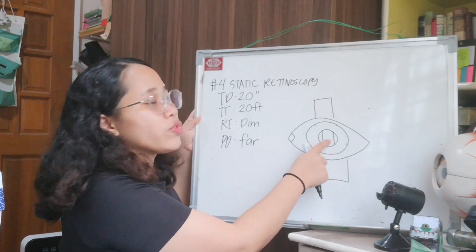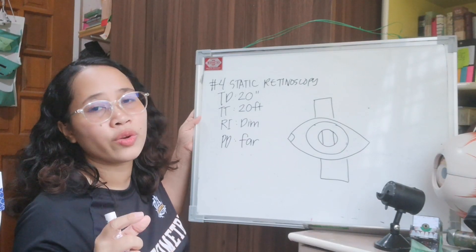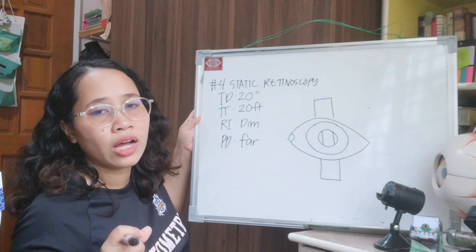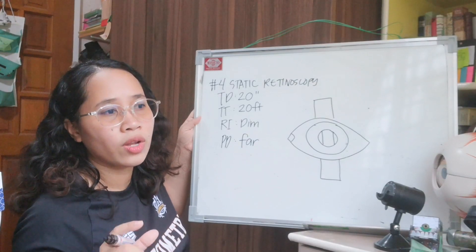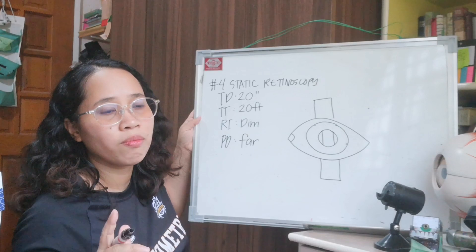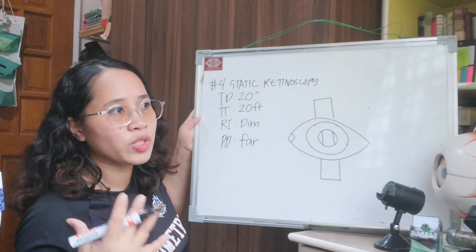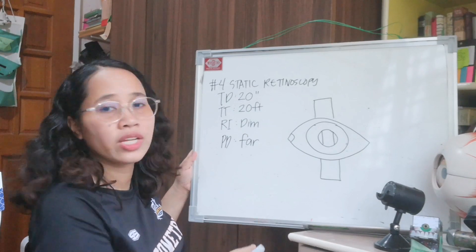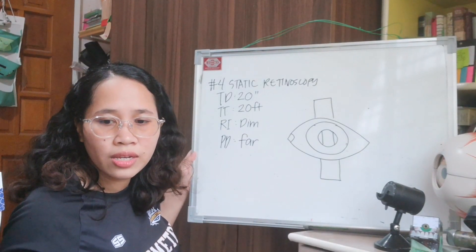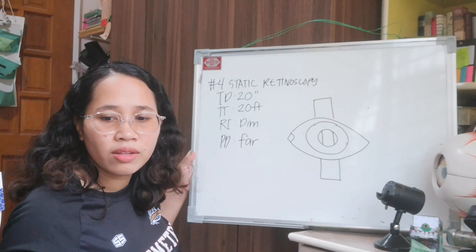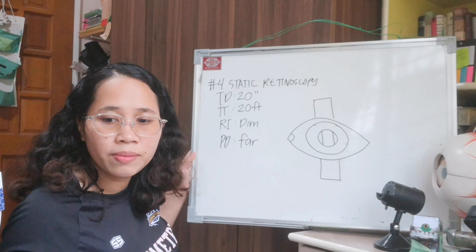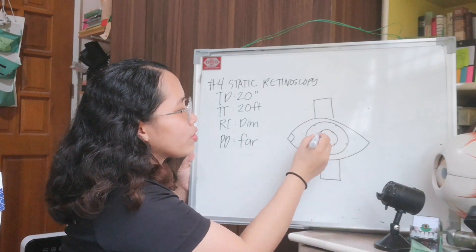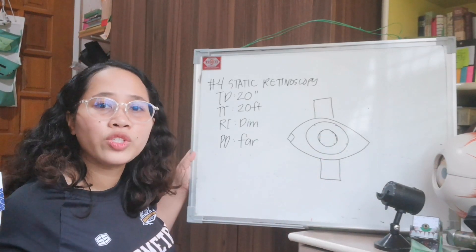The more clear the fundus reflex inside, the lesser the refractive error of the patient. But if the color is dull, meaning the ametropia or the amount of refractive error of the patient is high. For intensity — very bright means low ametropia, and dim means high ametropia. And then we have size — if the reflex is wide or thick, it means you are approaching neutrality.